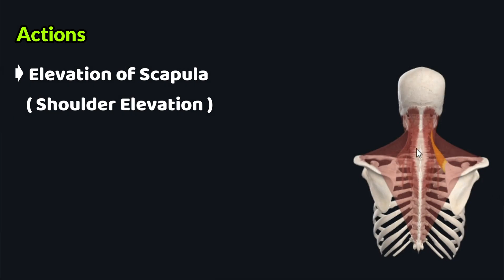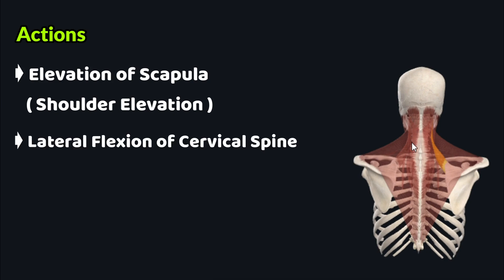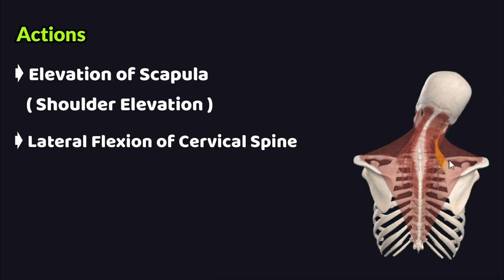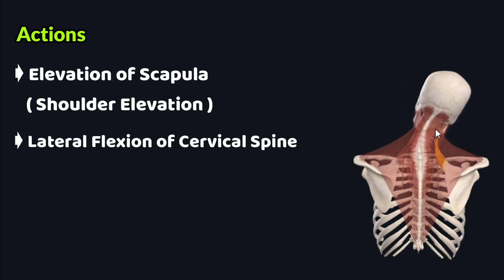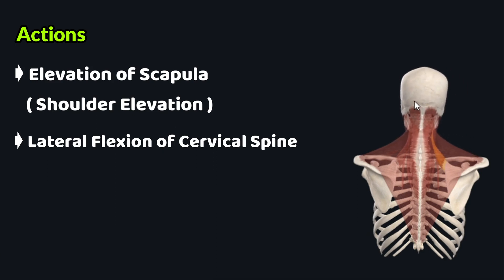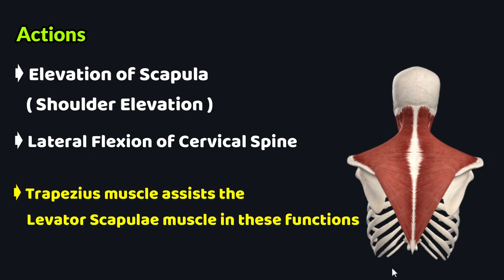When the insertion of the levator scapulae on the medial border of the scapula is fixed and the muscle acts through its origin on the cervical spine, it performs lateral flexion of the cervical spine, thereby decreasing the angle between the cervical spine and the shoulder girdle. The trapezius muscle mainly assists the levator scapulae in these two functions.